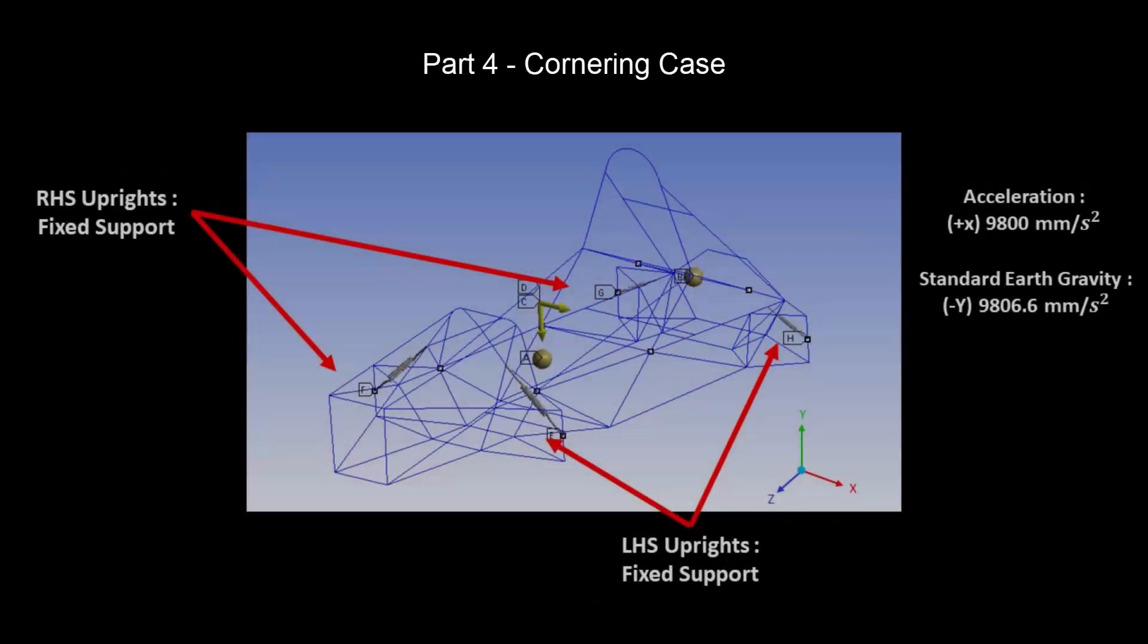For cornering case, the uprights will be fixed at their connecting nodes, with 1g acceleration acting in the positive x direction. The car is assumed to be turning right-hand side, and the influence of standard earth gravity has to be considered.